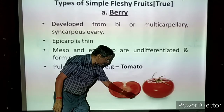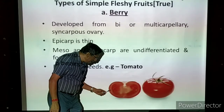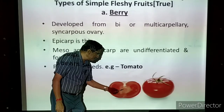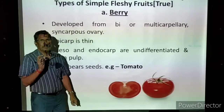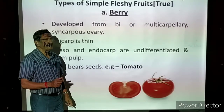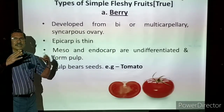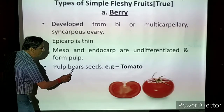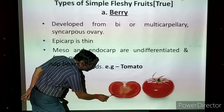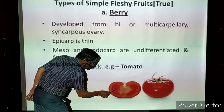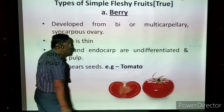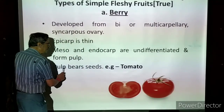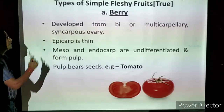In tomato, the outer thin papery red covering is the epicarp. The remaining thick, soft portion is called pulp, developed from the mesocarp and endocarp — but the color and thickness are the same throughout, so it is called pulp. The pulp bears an enormous number of seeds. So a berry has an enormous number of seeds, and the pulp bears the seeds. Example: tomato.